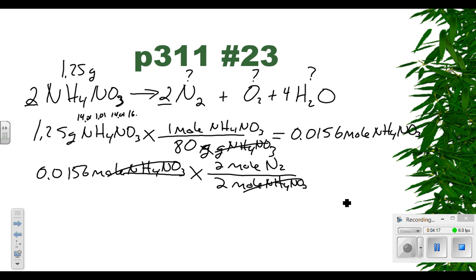So 0.0156 moles of nitrogen times, down here always goes one mole of nitrogen, and up here is going to go 28.02 grams of nitrogen. And so we multiply that times 28.02 and we get 0.438 grams of nitrogen.